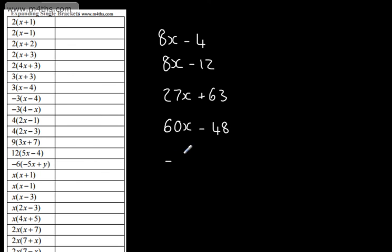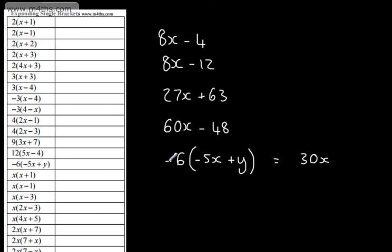Let's look at the next one. We've got here negative 6 multiplied by the quantity negative 5x plus y — so things are getting slightly harder here. 6 times by 5 is 30, times by x is going to give us 30x. We've got a negative multiplied by a negative, so our answer is going to be positive — I can just simply leave it as 30x. 6 times by y is going to be 6y. We've got a negative and a positive — a negative multiplied by a positive is negative — so we end up with minus 6y. So 30x minus 6y.